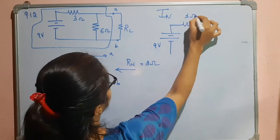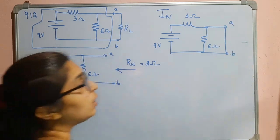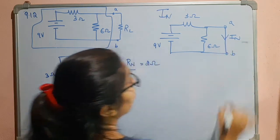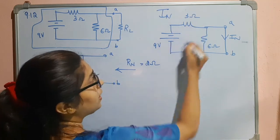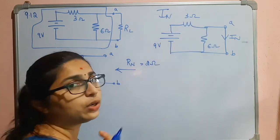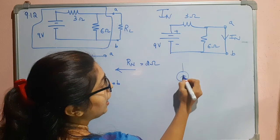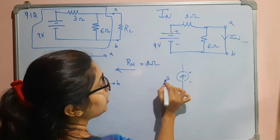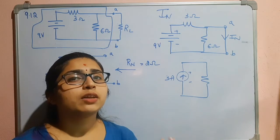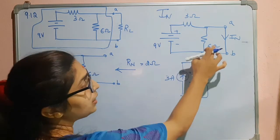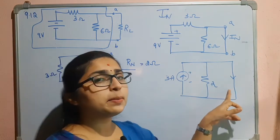Here I can find it using source transformation. I will apply source transformation to this: the voltage source is converted to a current source. The current value is 9 divided by 3, which is 3 amperes, with the arrow pointing towards the positive terminal. We will have a 3 ohm resistor in parallel, because in source transformation the resistance value does not change. Now 3 ohm and 6 ohm are in parallel, giving 2 ohms, and we have the shorted path.